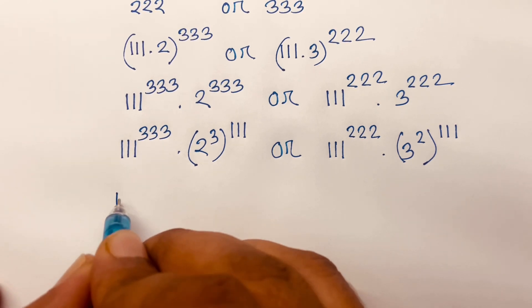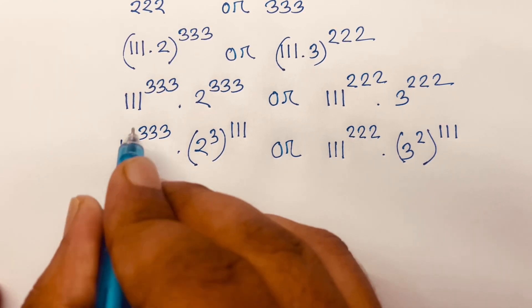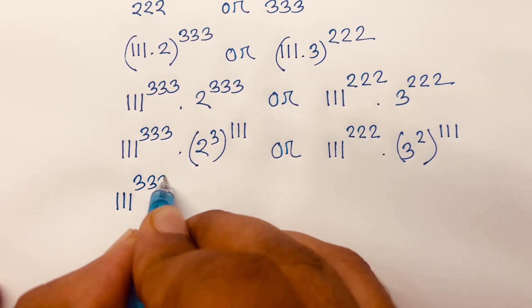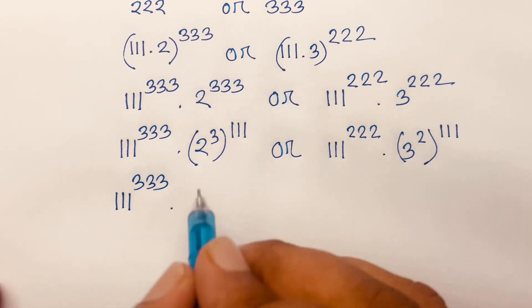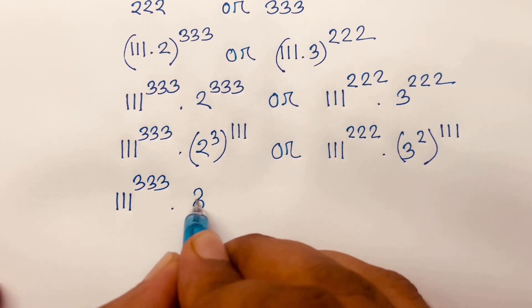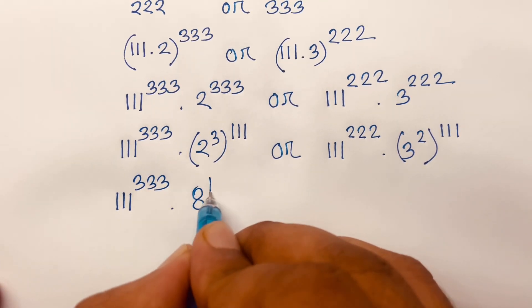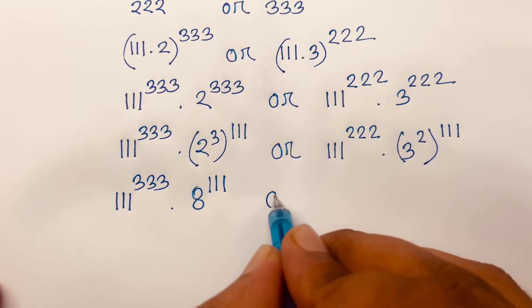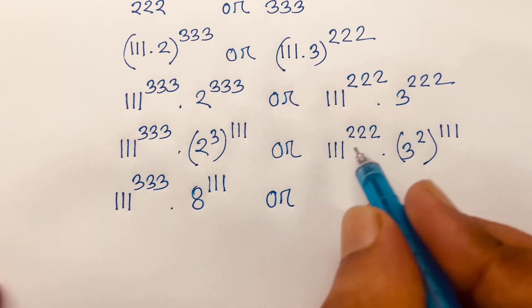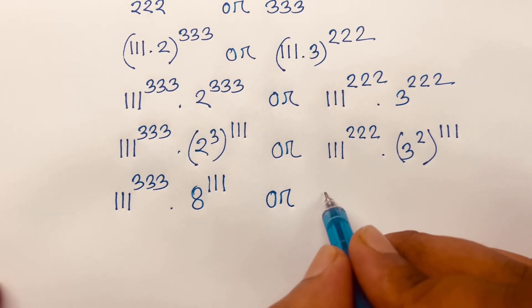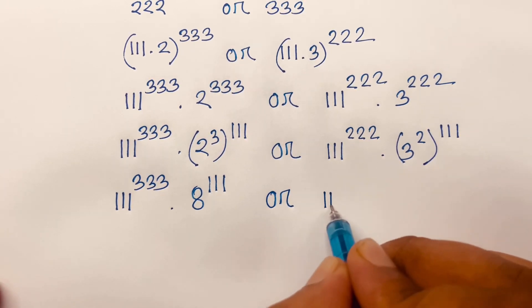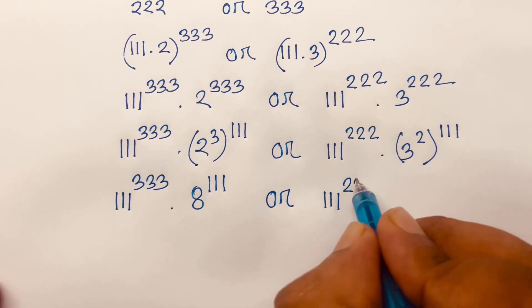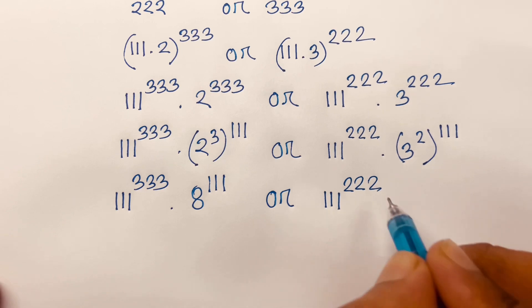Now, 111^333 times 2 to the power 3 — it will be 8 — so 8^111. Or in this case, 111^222 times...